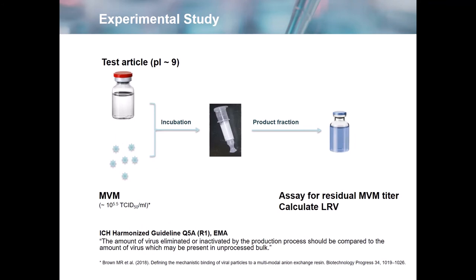This is the experimental study that was used. We have a test article with a PI of approximately 9. We spiked in a known amount of MVM. The samples were incubated in a spin column with the resin, and then the effluent was collected, and the assay was performed to determine residual MVM titer as well as calculate the LRV. Per the ICH Q5A guidelines, the amount of virus eliminated or inactivated by the production process should be compared to the amount of virus which may be present in unprocessed bulk. I would recommend that you speak with your CRO to determine the appropriate amount of clearance required.